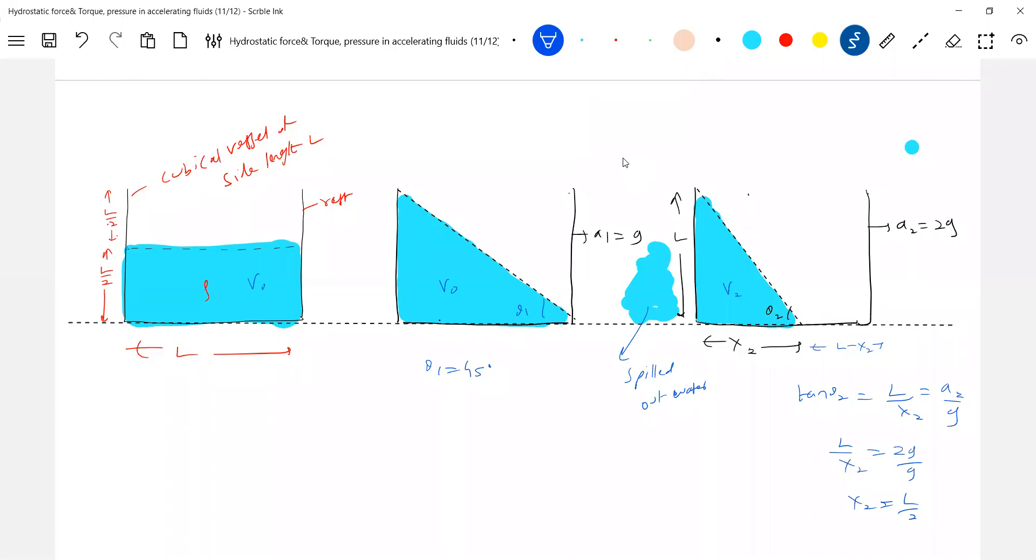Can we calculate how much volume of water is present inside this? This should be l square x2 by 2. This is the volume present inside. What is the volume spilled out? Vs, write it.